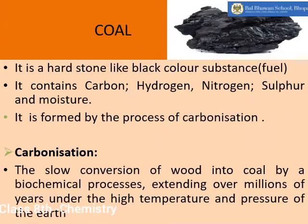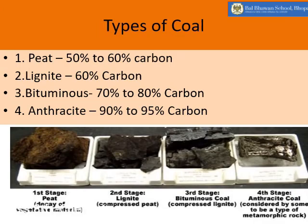Let us discuss about the first exhaustible natural resource: coal. Coal is a hard, black-colored substance that mainly contains carbon, hydrogen, nitrogen, sulfur, and moisture. It is formed by the process of carbonization. Carbonization is the slow conversion of wood into coal by a biochemical process extending over millions of years under high temperature and pressure of the earth. When trees get buried under the earth's crust, they undergo the process of carbonization, and the color of the wood changes slowly from grayish brown to dark black.